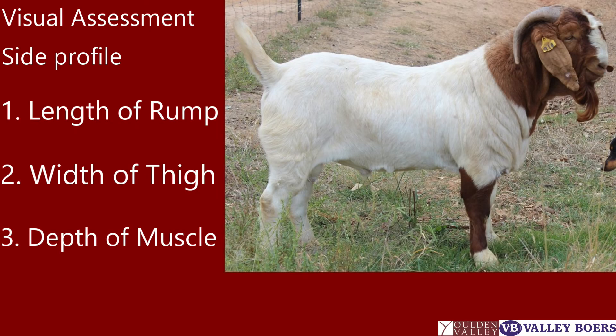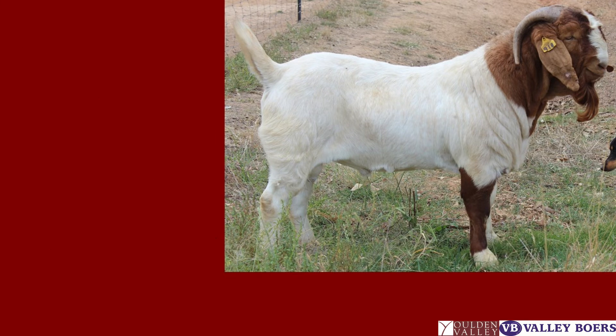From a side profile there are three main points: the length of rump, width of thigh, and depth of muscle. We'll start with the length and slope of the rump.